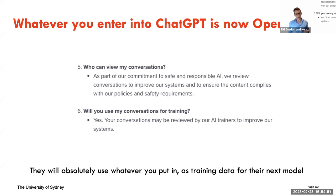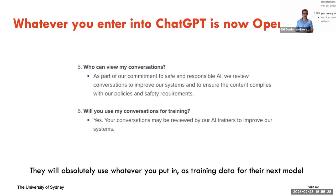Another major concern: anytime you use a product that is free, you're not using a product — you are the product. OpenAI is relying on all of us using their tools, answering questions, and creating conversations they can use to build successively more powerful models. All of the conversations you have — every single bit — they view all of it, they own all of it. Anything you put in will help train their models, which also means any private information you enter could potentially be generated back to someone else in the future.